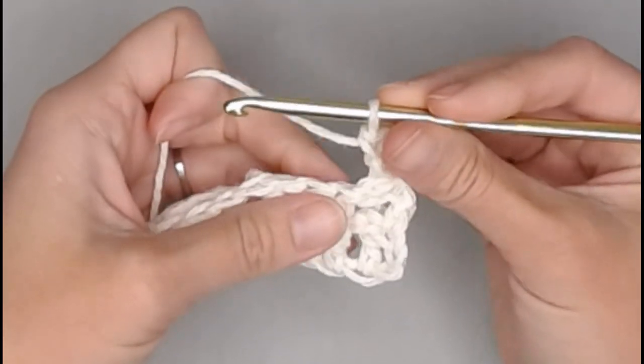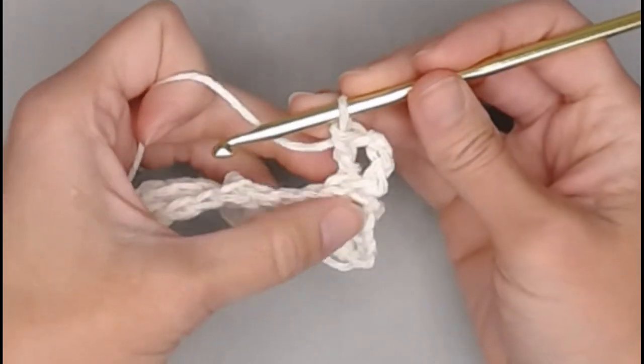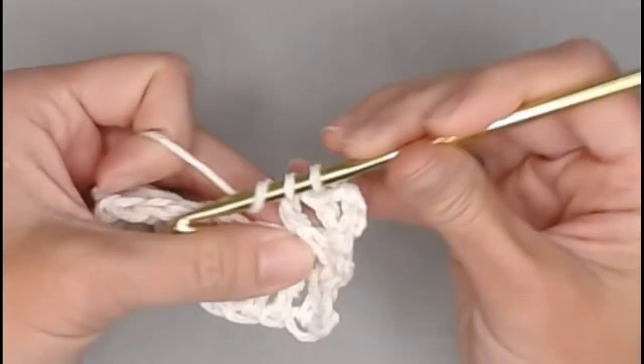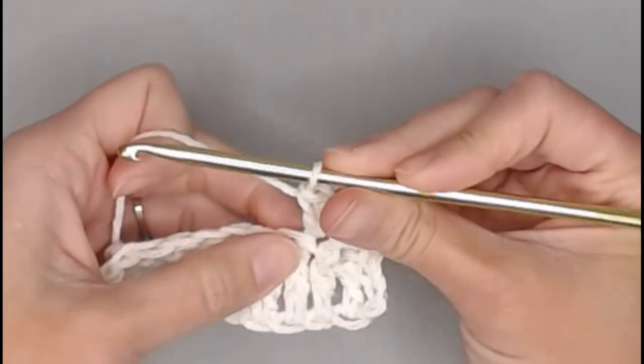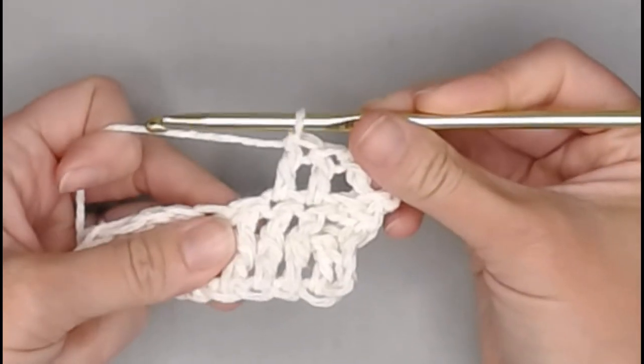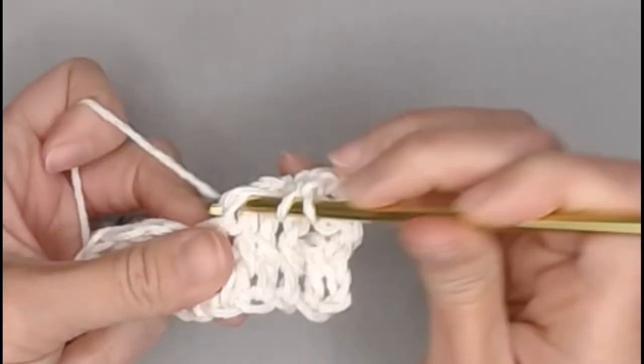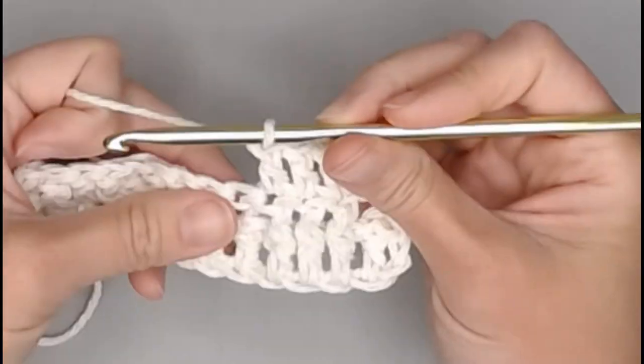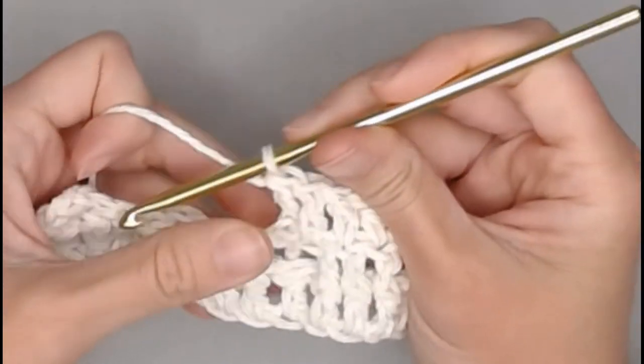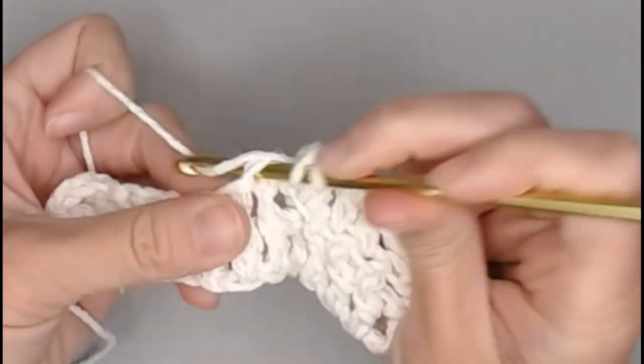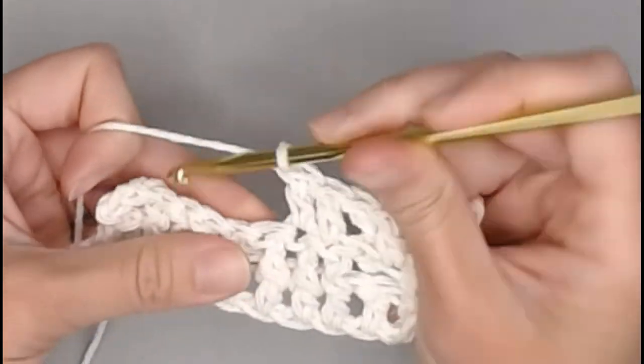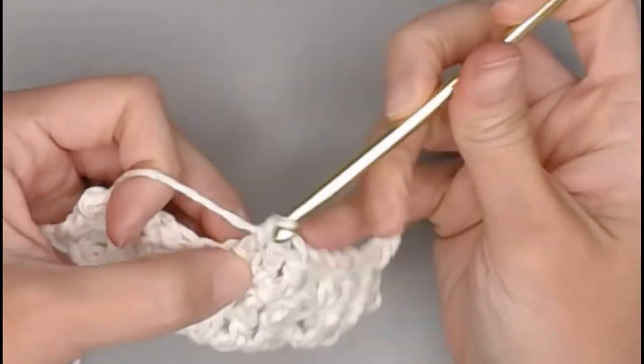Next three stitches, we are making a regular double crochet stitch. So this stitch is already taken. Next stitch, regular double crochet. One, regular double crochet, two, regular double crochet, three. Next stitch is a back post double crochet stitch. And we just repeat back post. Then three regular double crochets.